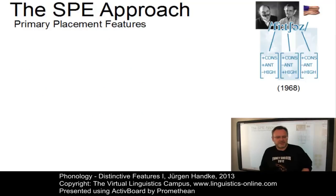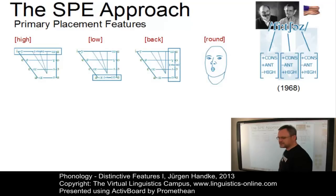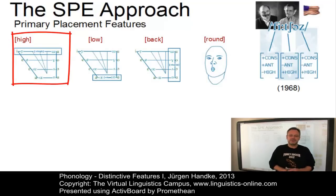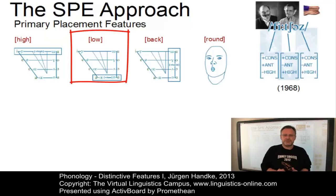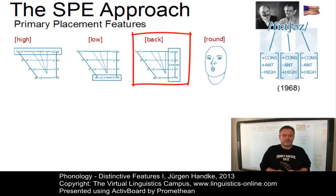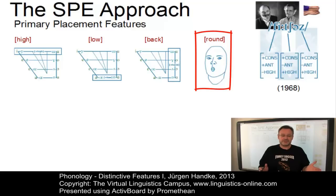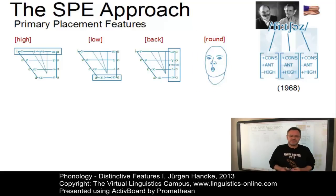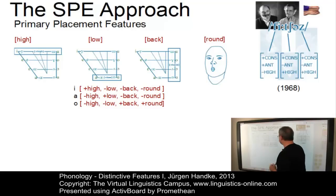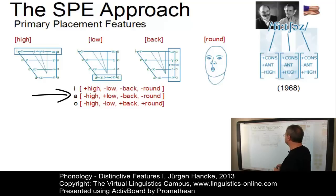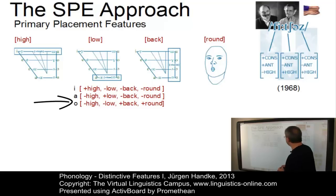A set of primary placement features supplements the major class features. Vowels can be defined using four such placement features: if they involve a high-tongue position they are plus-high; if the tongue is in a low position the feature is plus-low; if the back of the tongue is involved they are plus-back; and the distinctive feature round is used for vowels involving lip-rounding, distinguishing the primary set of cardinal vowels from the secondary set. For example, E is plus-high minus-low minus-back minus-round; cardinal four is minus-high plus-low minus-back minus-round; and O is minus-high minus-low plus-back plus-round.